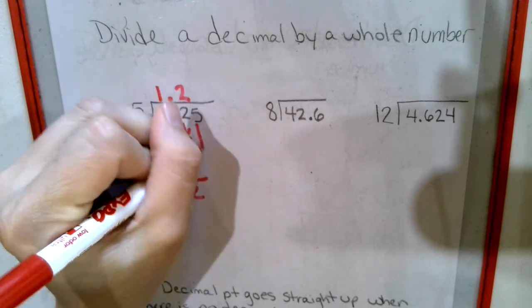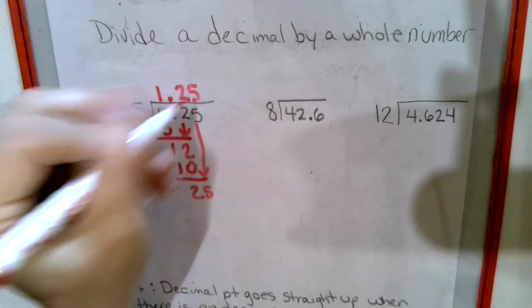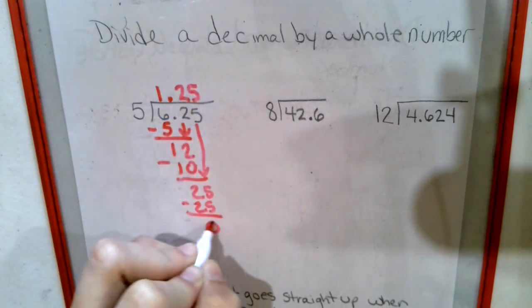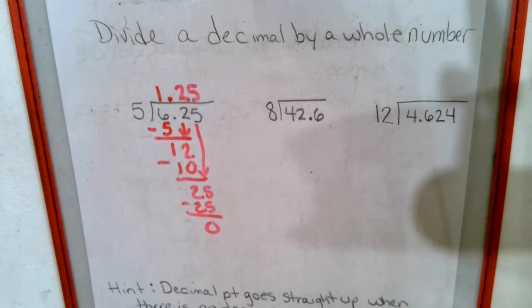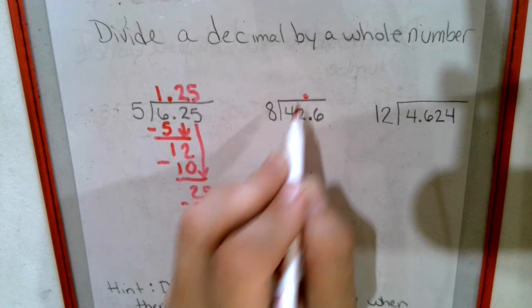2 left over. Bring down the 5. 5 goes into 25. 5 times 5 make 25. Nothing left over. That's the key right there. No decimal on the outside, raise it straight up.